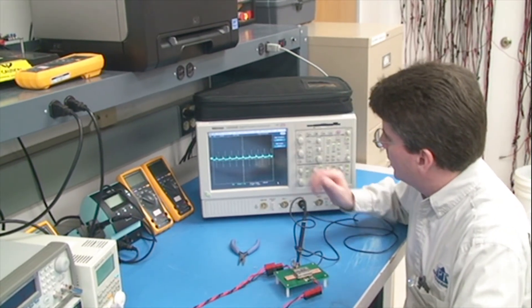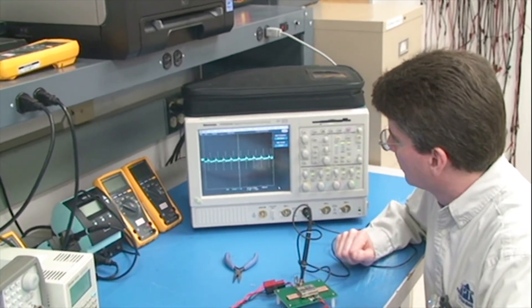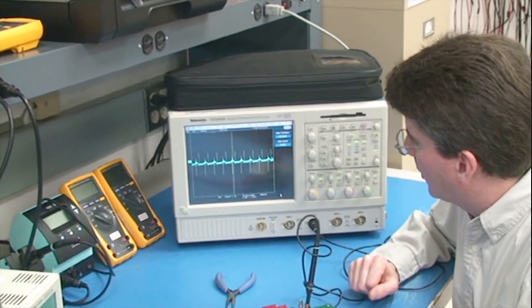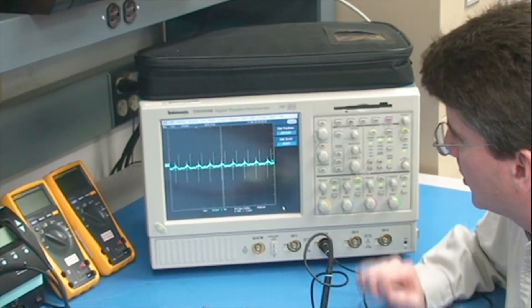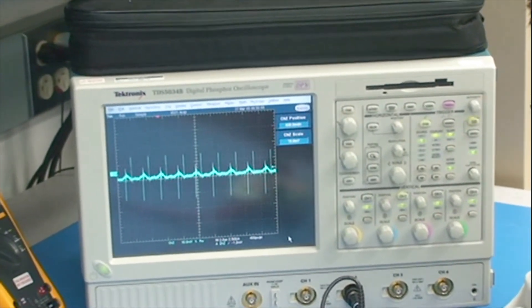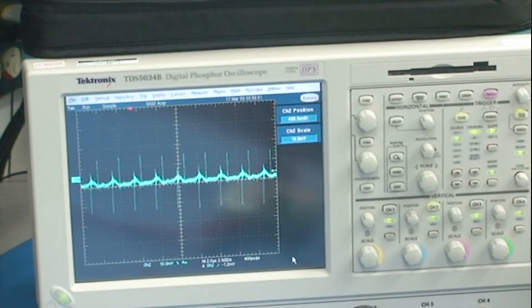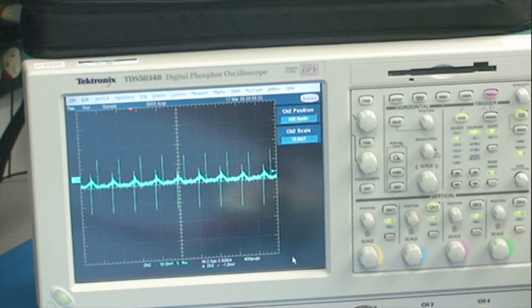Now here on the oscilloscope we can see the output ripple, and we can see about 30 millivolts peak-to-peak. This is measured with a 20 megahertz bandwidth on the oscilloscope. The specification for this part is 40 millivolts peak-to-peak.